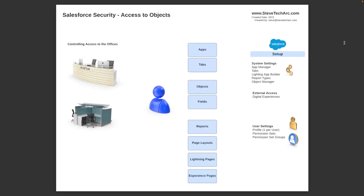Now that we've entered the building, we start going into offices, and each office is going to be controlled — there'll be reception controlling access to the office. These settings cover elements such as what apps you have, what tabs are in those apps, what objects this particular person gets access to, and what fields on those objects. There are also which reports they can run, what the page layouts and Lightning pages are, and if coming through an Experience, what the Experience pages are. I think of this as office level security.